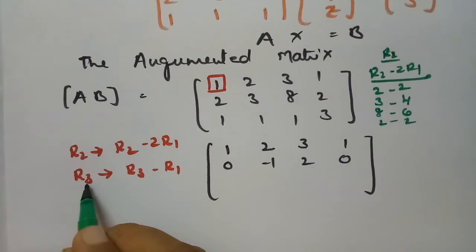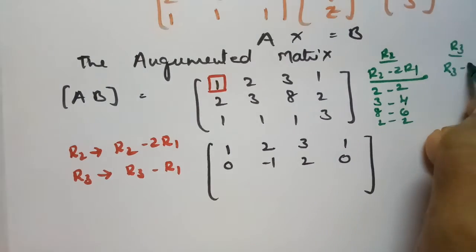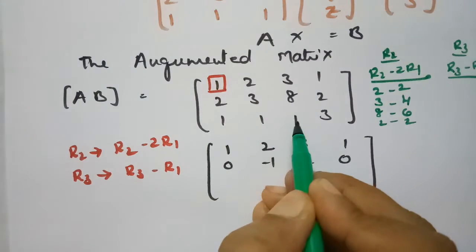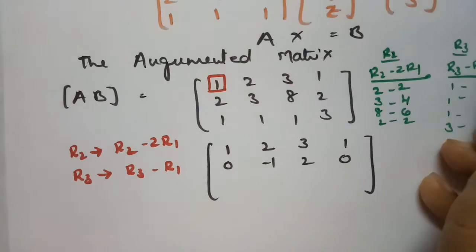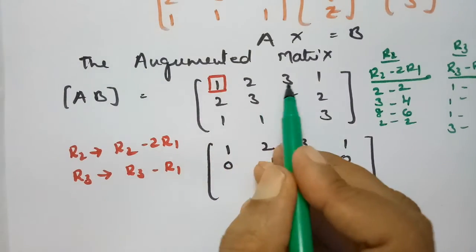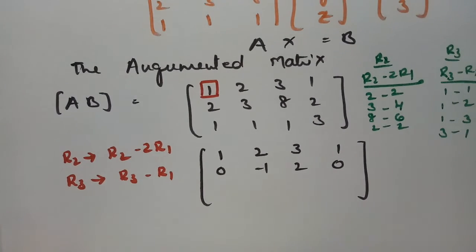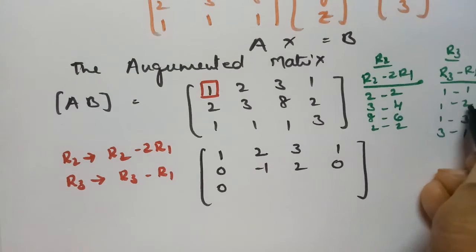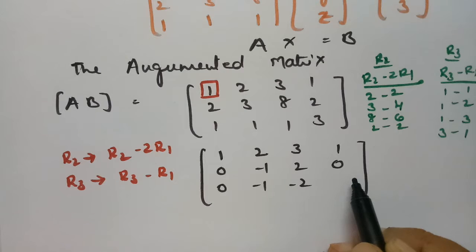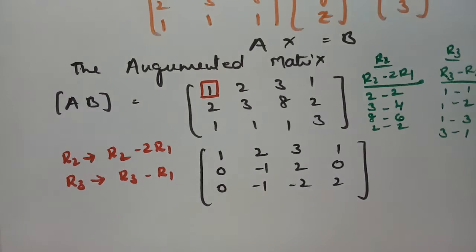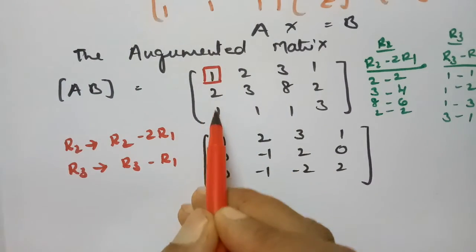For row 3, the operation is R3 minus R1. R3 is 1, 1, 1, 3 and R1 is 1, 2, 3, 1. So: 1 minus 1 = 0, 1 minus 2 = minus 1, 1 minus 3 = minus 2, and 3 minus 1 = plus 2. Now using the second diagonal element, we have to make the entry below it zero.